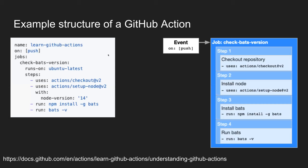From the documentation you could find the structure for GitHub actions. They have a name field, a field for when the event is happening, and then a jobs section. Each job can have steps, and those steps run on a certain runner on GitHub. Steps can use various actions that are available, or just run a simple command. You can have multiple jobs and multiple event types that could trigger — it's fairly straightforward.